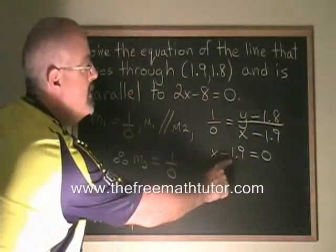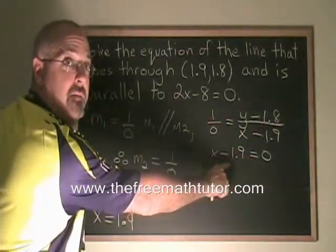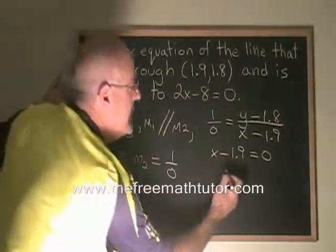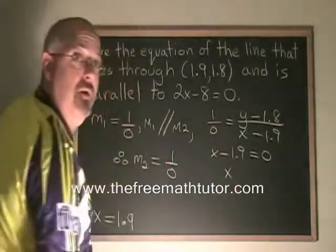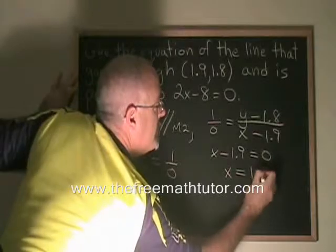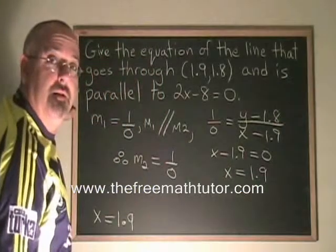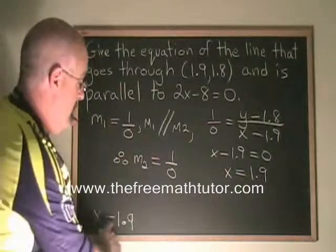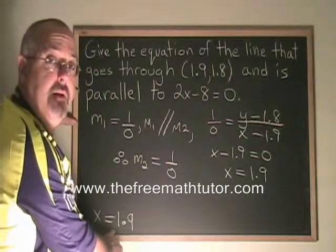This is the equation in standard form. And I cannot express a vertical line in slope intercept form. But I can put the negative 1.9 on the other side of the equals, where it becomes positive 1.9. And I can express the equation of this vertical line as x equals 1.9, which is the answer I was expecting all along.